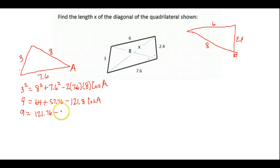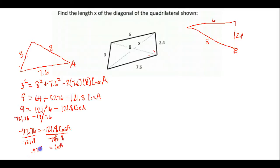Now these are multiplied together, so they need to stick together, but I can subtract 121.76. And if I do that, I get negative 112.76 is equal to negative 121.8 cosine of A. Again, we want to solve for cosine of A. It's multiplied by this negative 121.8, so to remove that, we would divide by negative 121.8. Now I'm down to, and we get about 0.9257. I would suggest just leaving that number in your calculator as we do this next step.